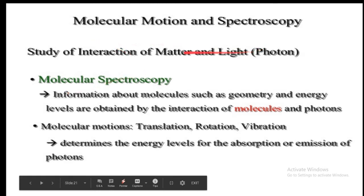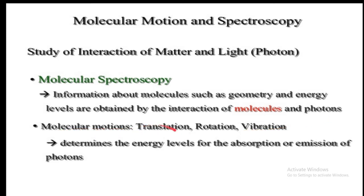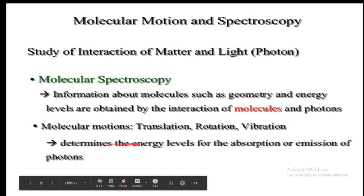Molecular spectroscopy is the study of interaction of matter and light. Molecular spectroscopy gives information about molecules such as geometry and energy levels, obtained by the interaction of molecules and photons. Molecular motion consists of translation, rotation, and vibration, and these motions determine the energy levels for the absorption or emission of a photon.